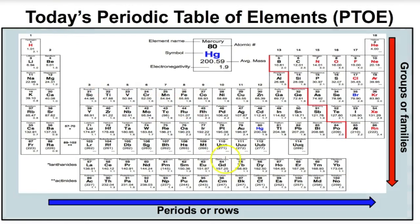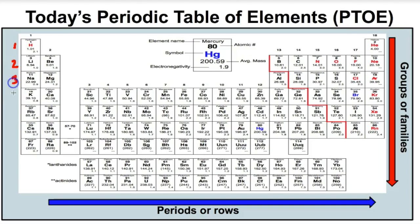Here's today's periodic table — we have about 115 known elements. The first thing you need to know is that periods or rows are the horizontal rows on the periodic table. For example, period one consists of hydrogen and helium; period two consists of lithium, beryllium, boron, carbon, nitrogen, oxygen, fluorine, and neon. This is row three, row four, period five, six, and seven.